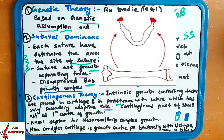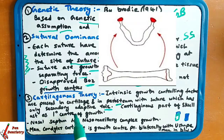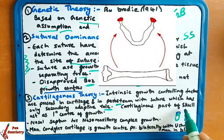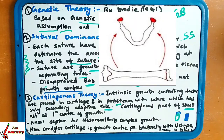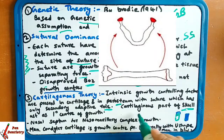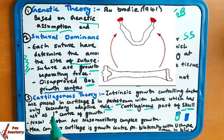Growth will take place according to cartilaginous theory. The periosteum with cartilage gives a secondary adaptive role. Regarding the skull, the cartilaginous part of the skull acts as the primary center of growth. That means the primary growth center is the cartilaginous part of the skull.